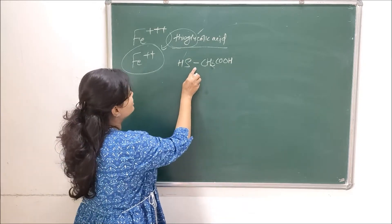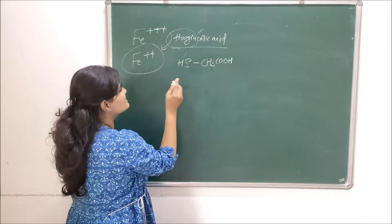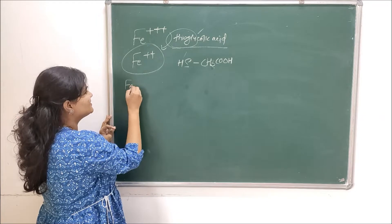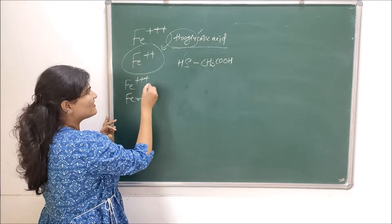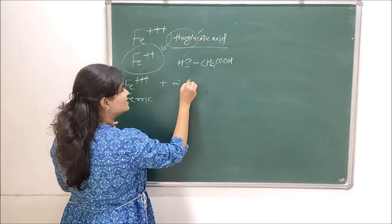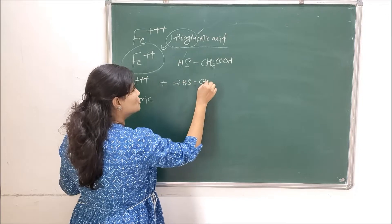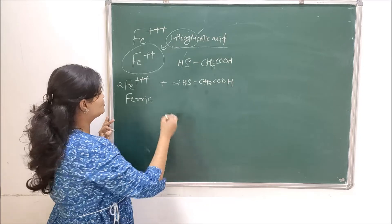So this thioglycolic acid is reacting with either of these forms. We will start with the ferric form. So ferric form of iron - I will take two here, I will take also two here - two moles of thioglycolic acid.